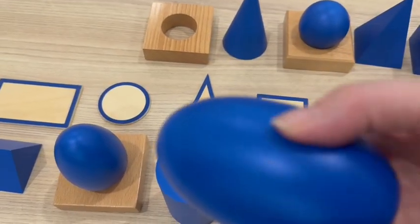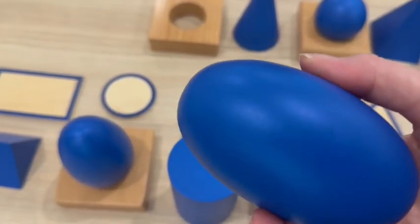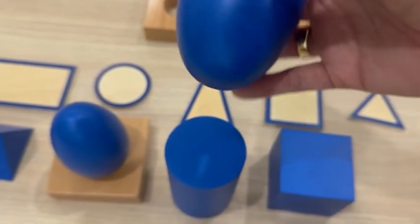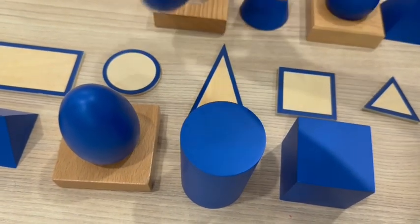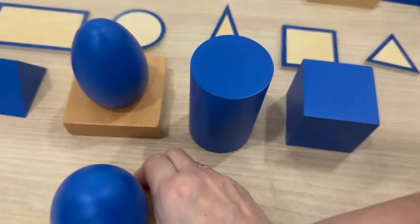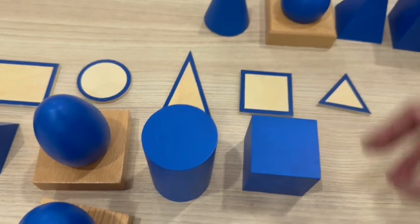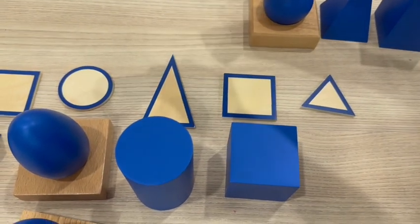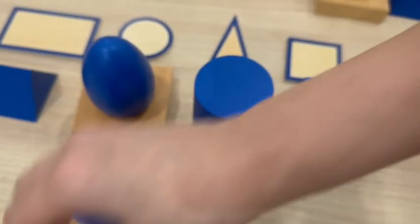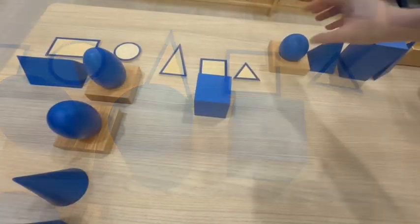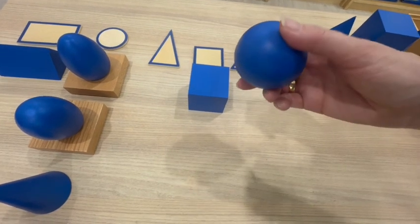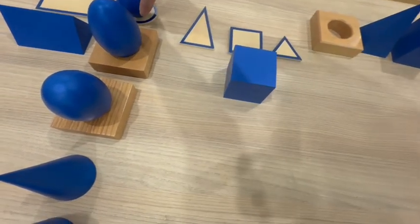This one, the ellipsoid, let's pretend that if we cut it in the middle, it will match with the circle too. The sphere, if we cut in half, it will match with the circle.